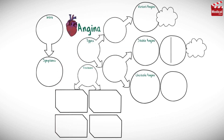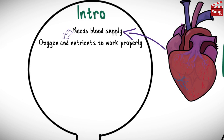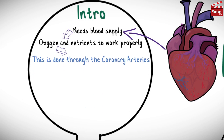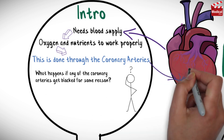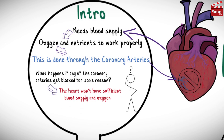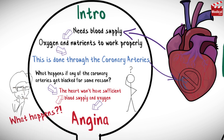In this video we'll discuss angina, going through an introduction, the symptoms associated with it, the three types of angina, and finally an introduction to the drugs used for it. The heart, like any other organ in the body, needs blood supply, oxygen, and nutrients to work properly, and this is done through the coronary arteries. If any of the coronary arteries get blocked, the heart won't have sufficient blood supply and oxygen — that is simply what causes angina.